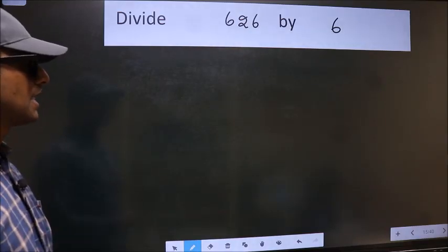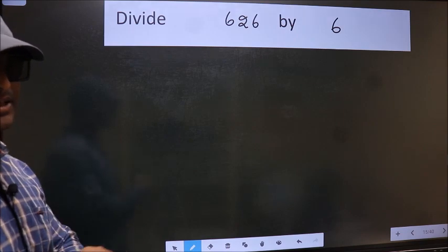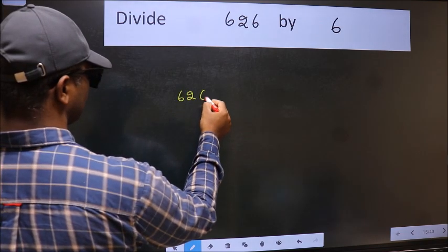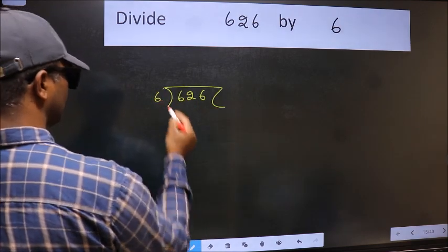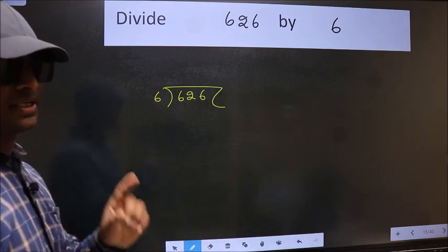Divide 626 by 6. To do this division, we should frame it in this way: 626 here and 6 here. This is your step 1.